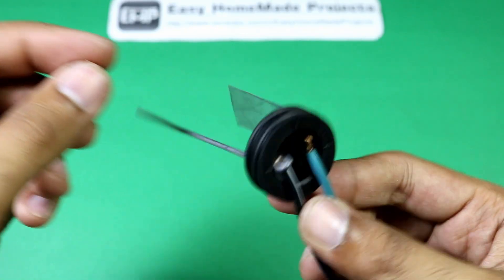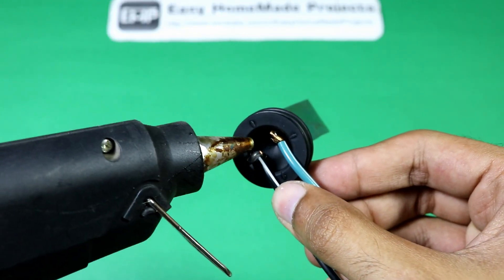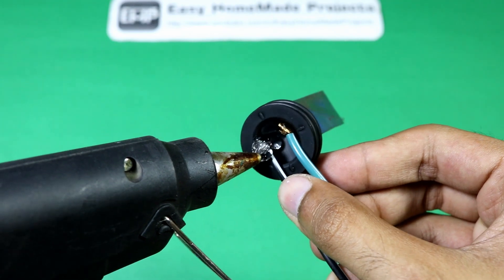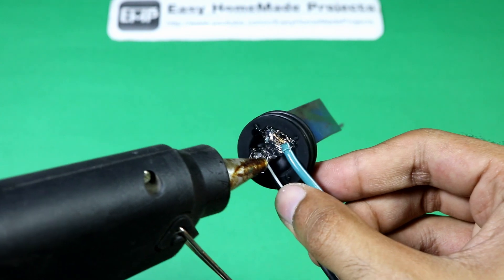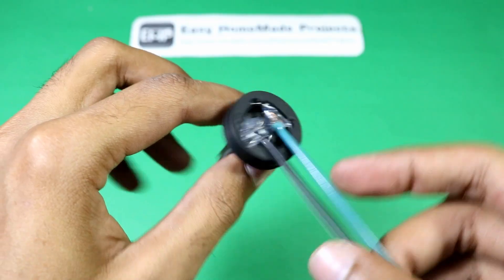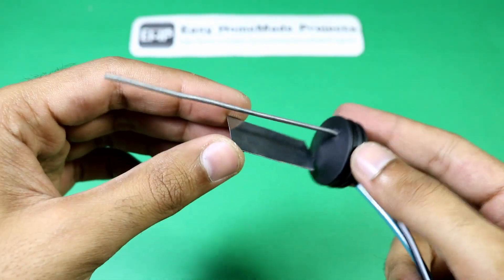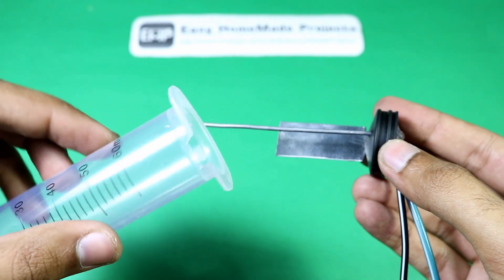Repeat the same process for the anode and put some hot glue to fix them in place. Now our electrode assembly is ready. Insert it into the syringe.